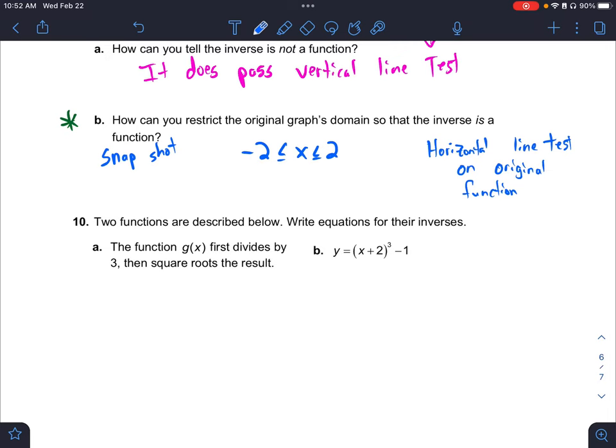And then the last one here with inverses. Again, we're doing opposite and backwards. So when I look at this one, it says the function first divides by 3, then square root. So I'm going opposite backwards. So I'm just going to write out what that is. So instead of square root, I'm going to square. And then instead of divide, I'm going to multiply 3.